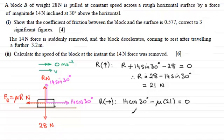And I can rearrange this for mu. If I add 21 mu to both sides, I get 21 mu equals 14 cos 30, and then if I divide both sides by 21, I end up with mu equaling 14 cos 30 degrees divided by the 21. And if I work that out, you end up with 0.57735, and so on.